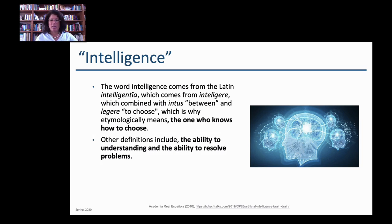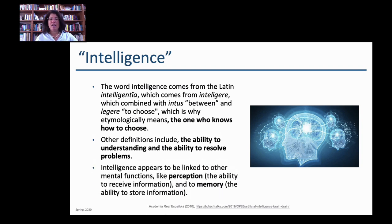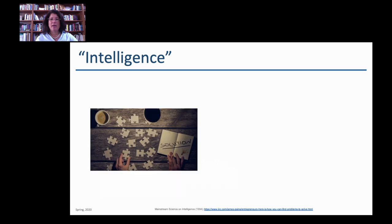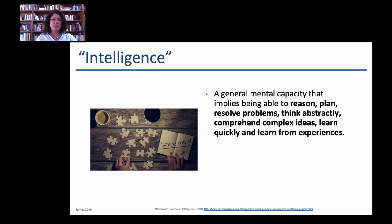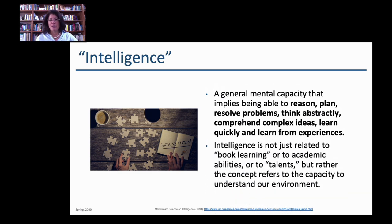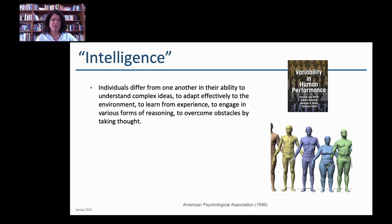Other definitions of intelligence are related to the ability to understand or to resolve problems, and we know it's very heavily reliant on sense perception as well as memory. Intelligence is a general mental capacity that implies being able to reason, plan, resolve problems, think abstractly, comprehend complex ideas, and learn — really quickly or from habituated experience. There's a big spectrum of ideas to consider, including street smarts versus being innately gifted.